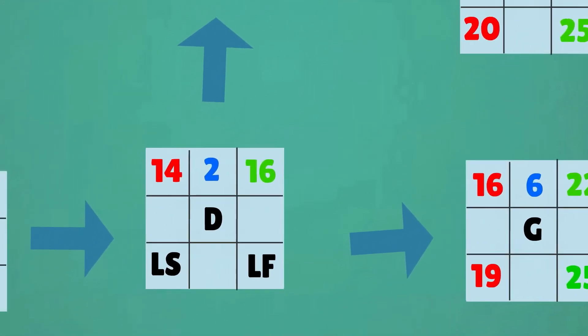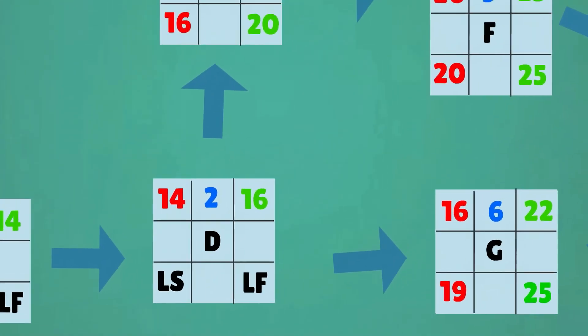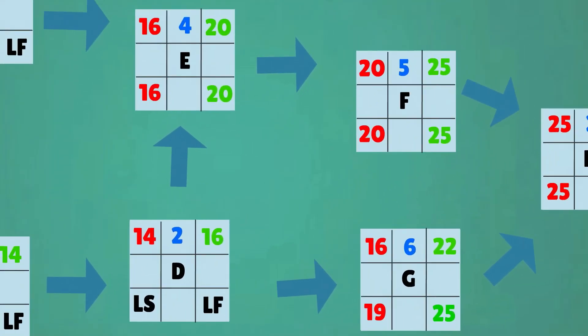With activity D, there are two possible late finish times. As the project should not be delayed in this reversed approach, the earliest late start is used as the late finish of activity D, in this case week 16.